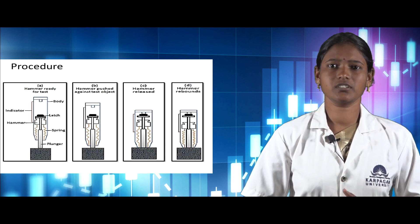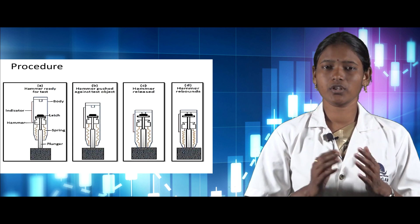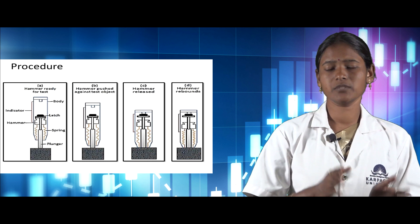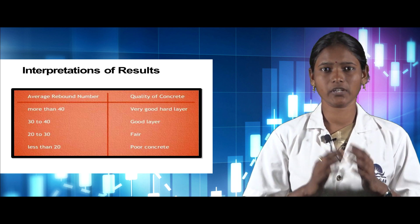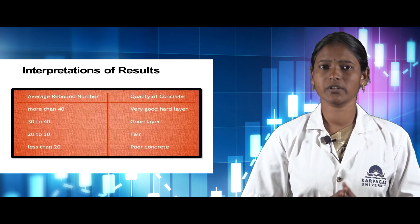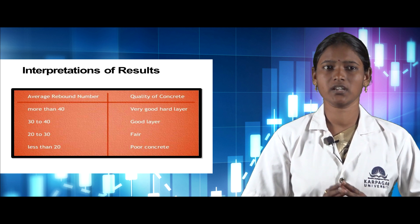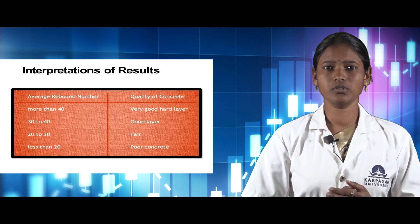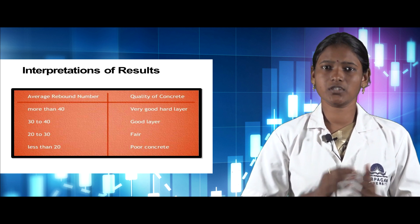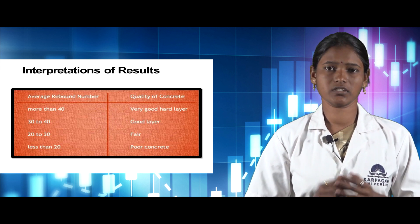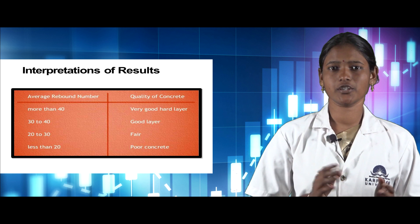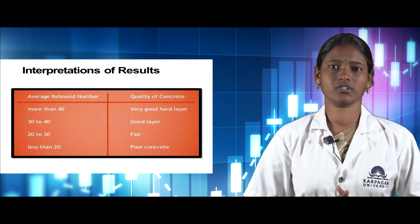The interpretation of test results for the rebound hammer test is based on the average rebound number, which specifies the quality of the concrete. If the average rebound number is more than 40, it is a very good hard layer. If it is 30 to 40, it is good. If it is 20 to 30, it is fair. If it is less than 20, it is poor.